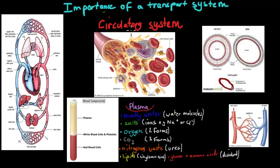Blood is transported in the circulatory system for animals. In animals we've got a heart which pumps blood from the arteries through the capillaries and then back to the heart through the veins. These three structures — these blood vessels — are what you need to know.